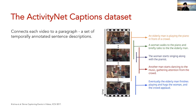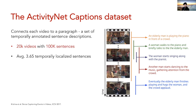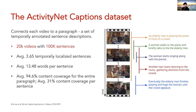The dataset itself consists of 20,000 videos. On average, there are three to four sentences that are temporally localized per video, with 13 words per sentence. The temporal localizations of these events, when combined, cover nearly 95% of the full video on average.